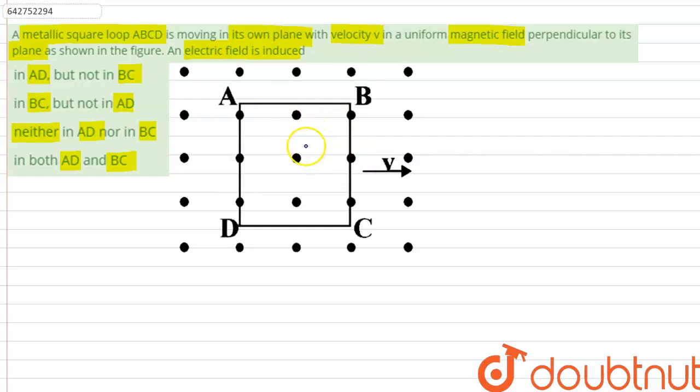Since this is a metallic square loop, there will be free electrons. When the loop moves in magnetic field, the free electrons in rod AD and BC will experience Lorentz force and they will move towards the end, creating a potential difference between AB and DC.